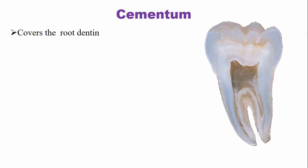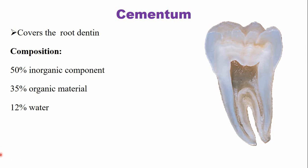The next hard tissue is cementum. Cementum covers the root dentine — a thin layer is present over the root. You can see the dentine, and this thin layer is the cementum that covers the root dentine. Cementum comprises 50 percent inorganic material, also hydroxyapatite but less than enamel and dentine, 35 percent organic material — mainly collagen type 1 and non-collagenous proteins — and 12 percent water.